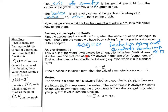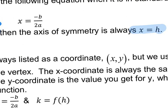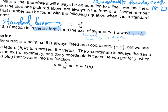The axis of symmetry is always just an equation of a vertical line: x equals some number. In standard form, use h = −b / 2a. In vertex form, h is simply whatever your h-value already is. In factored form, h equals the average of your two zeros: (z₁ + z₂) / 2. Either way, the axis of symmetry is just x = h.